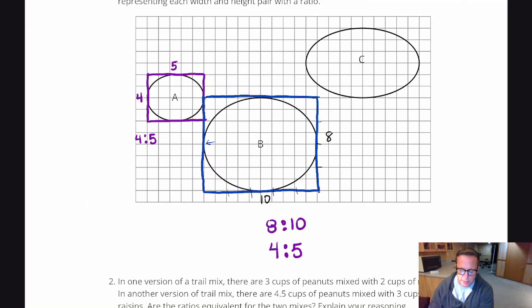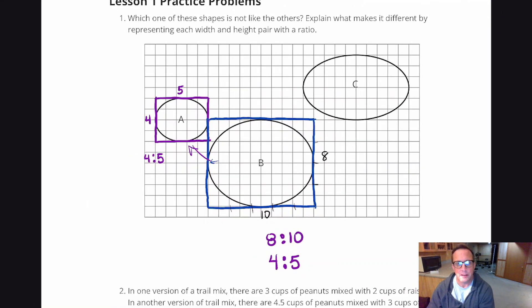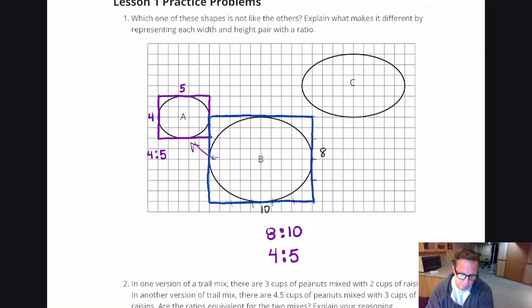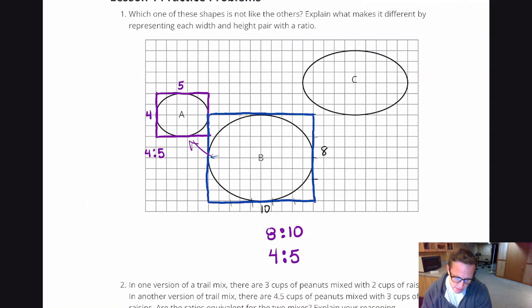So A and B definitely are a pair. Those definitely belong. So it's probably C, but let's confirm it. And you may have just known it was C just by looking at it. But again, that's not a good enough explanation. You can't just say it looks off. We have to be able to give a good mathematical reasoning, especially when it says express it as a ratio. So I'm betting that this does not come out to a ratio of four to five, right? Bet your bottom dollar.